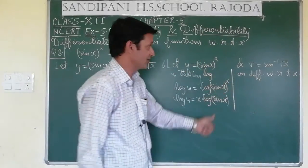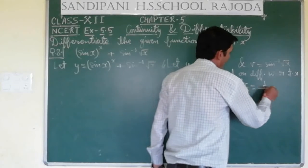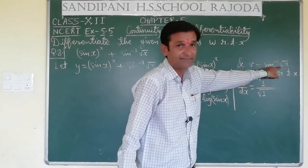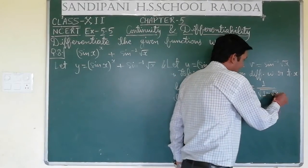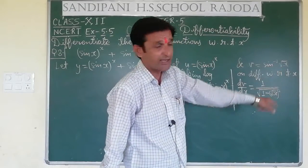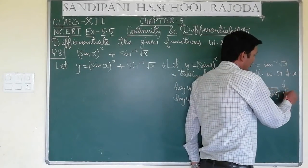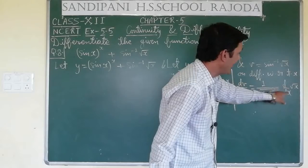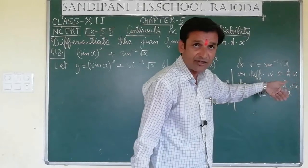Since there are now two functions of x, we will apply the product rule for first and second function. For the v part, we do not need log — we will differentiate it directly. Since v is a function of x, on differentiating v with respect to x, dv by dx equals 1 upon root (1 minus x), but wait — here it is not x, it is root x.